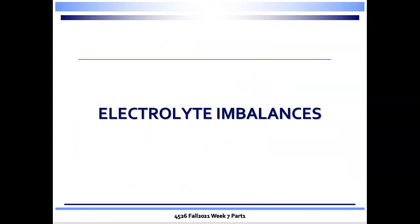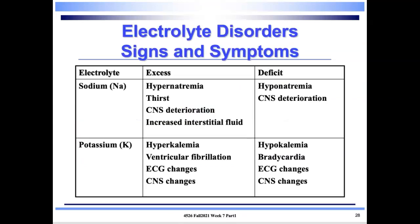Moving on to electrolyte imbalances — the two key ones are sodium and potassium. An excess of sodium is hypernatremia, with symptoms of thirst, CNS deterioration, and increased interstitial fluid. A deficit is hyponatremia, also with CNS deterioration. Excess potassium is hyperkalemia, with concerns about V-fib, ECG changes, and CNS changes. A potassium deficit — hypokalemia — involves bradycardia, ECG changes, and CNS changes. Cardiac and neurological systems are the top two organs of concern.